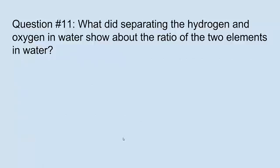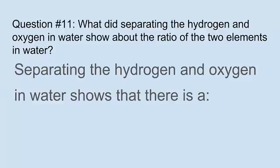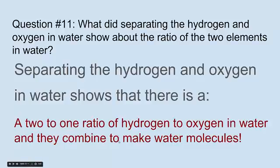Question eleven: What did separating the hydrogen and oxygen in water show about the ratio of the two elements in water? Well, separating the hydrogen and oxygen in water shows that there is a two to one ratio of hydrogen to oxygen in water, and they combine to make water molecules. That's why we call it H2O. There's just one O, there's two H.